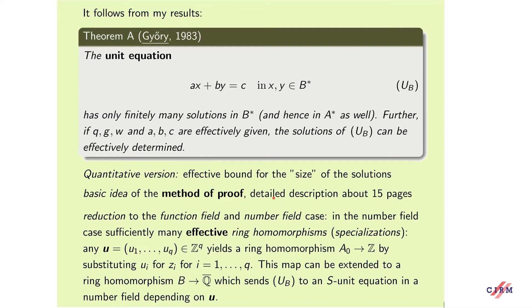The description of the method would be rather complicated and long, so I shall mention here only the basic idea. The first step is to reduce the equation to the function field and number field case. In the number field case, one can apply many effective ring homomorphisms, that is specializations, to obtain the required result. Any U in Z^Q yields a ring homomorphism by substituting U_i for Z_i for i=1 to Q. This map can be extended to a ring homomorphism from B to Q-bar, which sends this equation to an analogous equation in a number field depending on U.